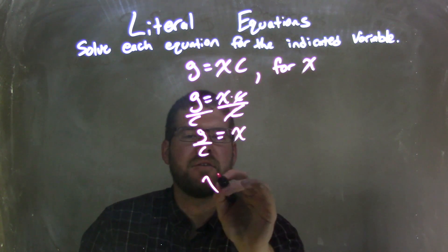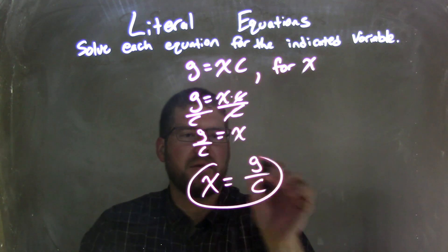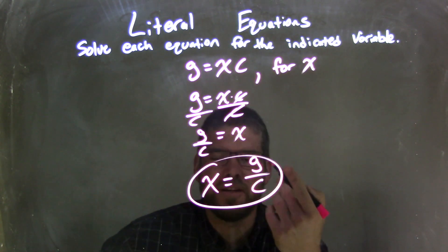So I'm going to rewrite this and have x come first, so x equals g over c, and there we are. That is our final answer: x is by itself, and it's equal to g over c.